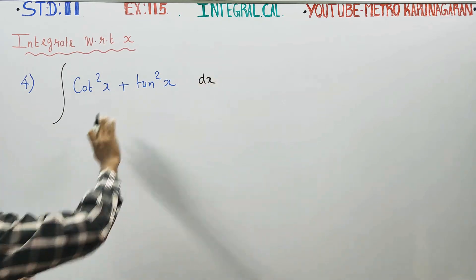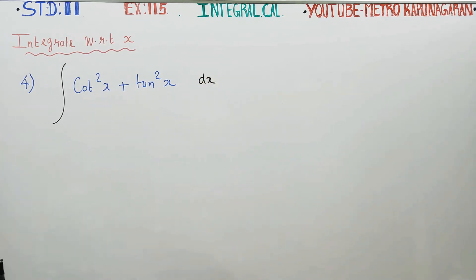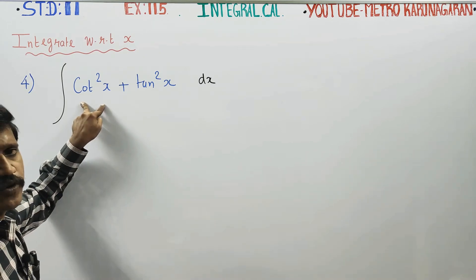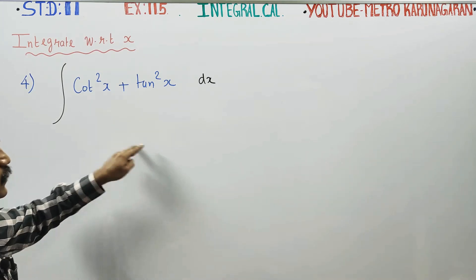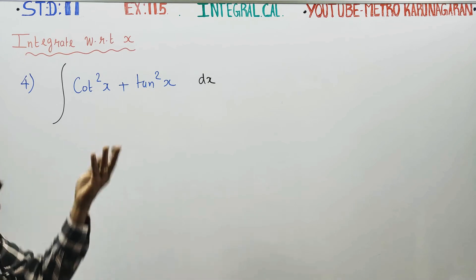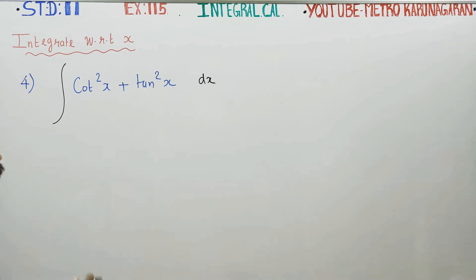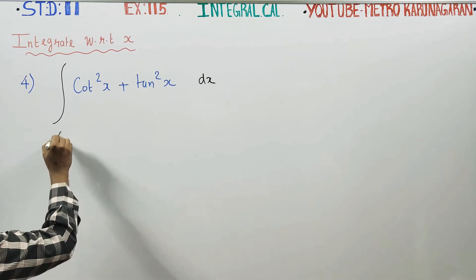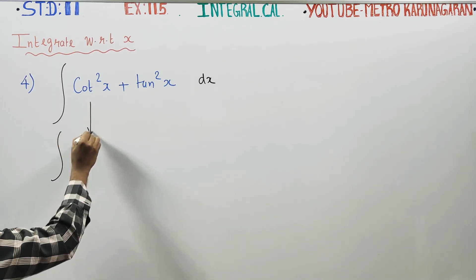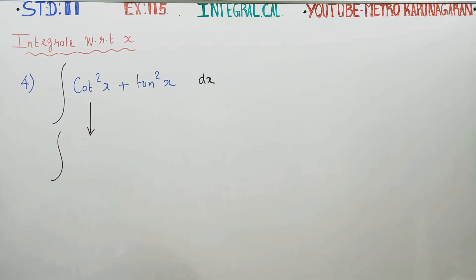There is no ready-made formula for cot square and no ready-made formula for tan square. Instead of splitting, we will try using trigonometry identities.